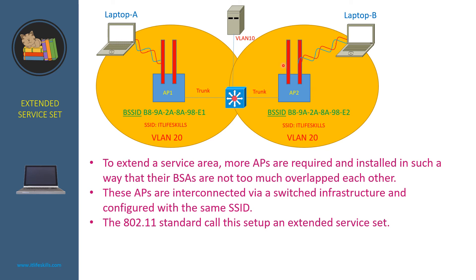In this network, both AP1 and AP2 are configured with the same SSID, IT LiveSkills, and map to VLAN 20. However, AP1 has its own BSS ID and AP2 has its own BSS ID. The two APs are interconnected via a Layer 3 switch using trunk links. Both Laptop A and Laptop B are configured to join the wireless network IT LiveSkills. However, depending on their locations, Laptop A will send its joining request to AP1 via AP1's BSS ID, while Laptop B will send its joining request to AP2 via AP2's BSS ID.